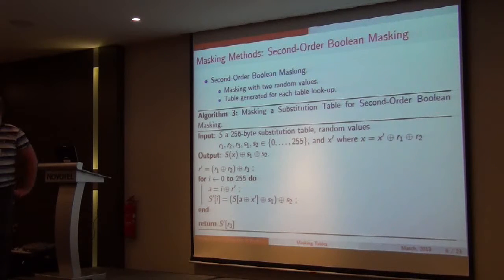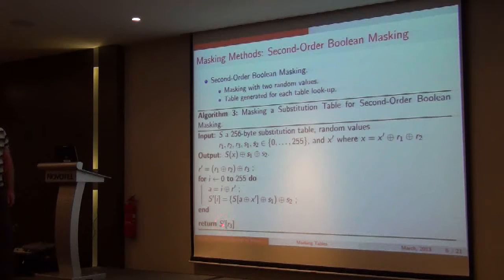And moving on to higher order masking schemes. As Tom was saying, we often have more than one share if we want to have a higher order resistance. So in this case, for the second order masking scheme, we have two random values. We have R1, R2 that mask an index and S1, S2 will mask our data. In this instance, this table has to be constructed every single time we want to do a table lookup, as this only produces the result of one byte and we have to then change the random values to avoid leakage. So these things can be very, very costly.